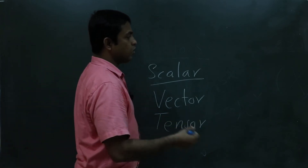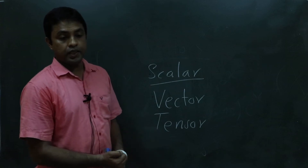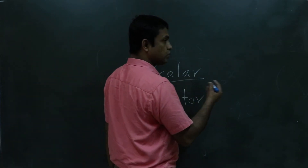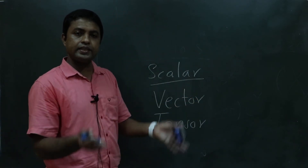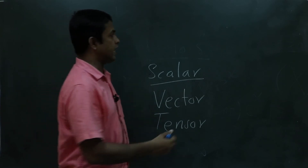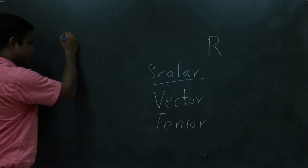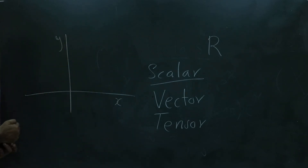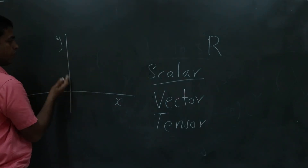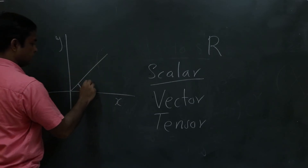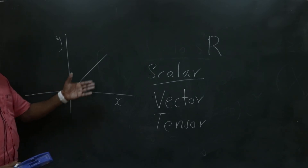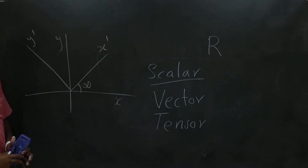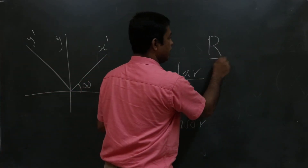Basically, there is a coordinate transformation. If you look at the three-dimensional Euclidean space with Cartesian coordinates x1, x2, x3, when you rotate in an arbitrary direction you can write it as a 3 by 3 matrix R. For example, in two dimensions with coordinates x, y, I can make a rotation about an angle alpha in the 2D plane. The transformation can be written using a transformation matrix R.